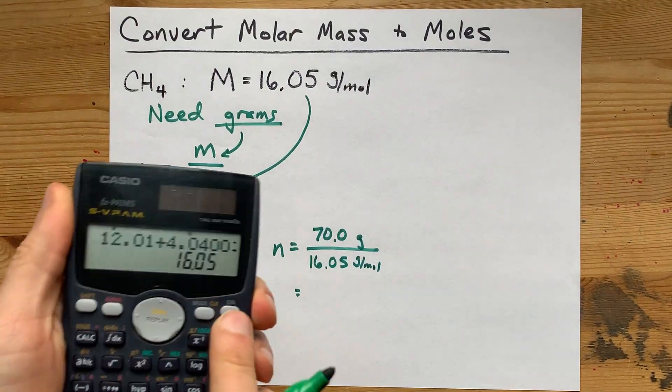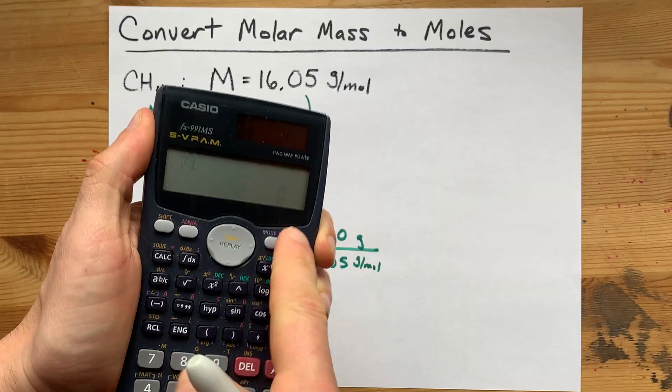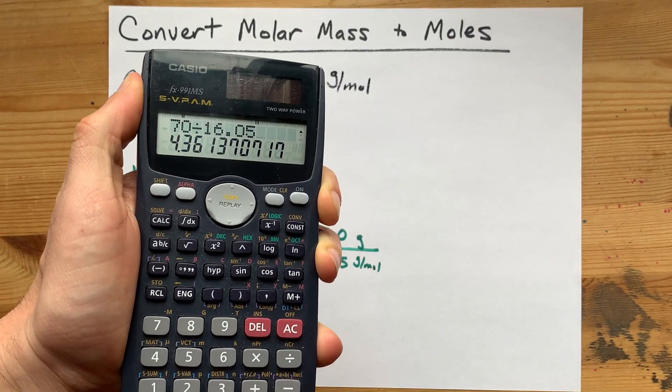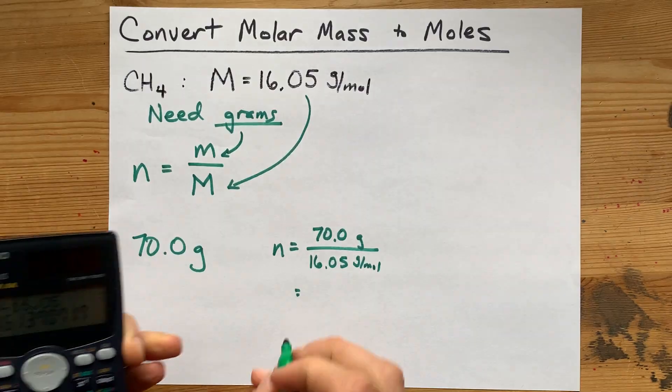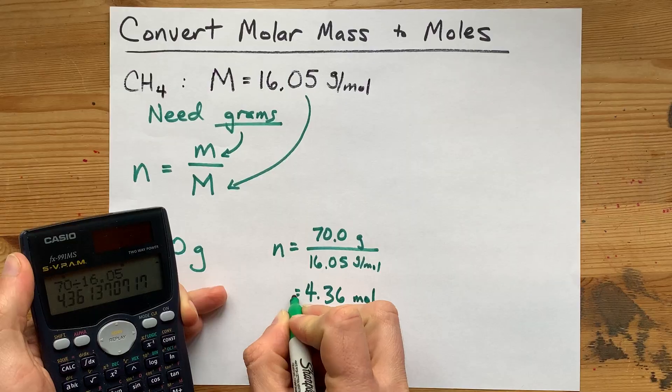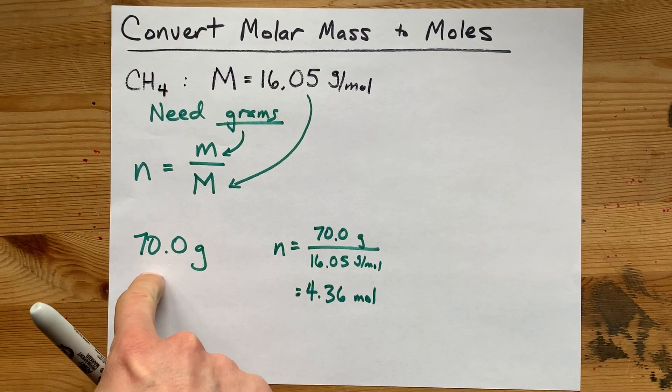You can use your calculator to figure that out. But 70 divided by 16.05 gives me 4.36. That's the number of moles in that 70 gram sample.